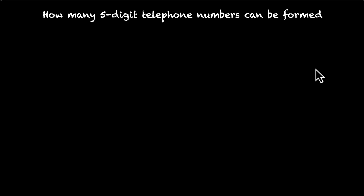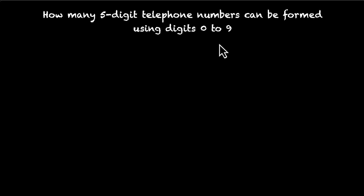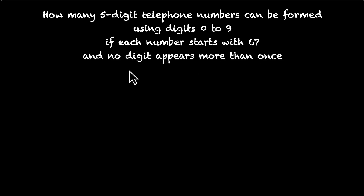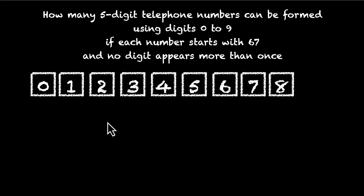Let's do one more. We are making a 5-digit telephone number using digits 0 to 9, so all digits 0 through 9 are available. The constraint is that each number starts with 6, 7 — maybe that's the area code — and no digit appears more than once, meaning repetition is not allowed. Here are the digits 0 through 9 and here are your five boxes.